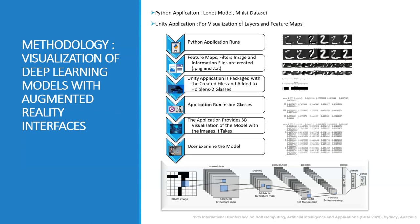In the study, a specific path was followed. In the Python application, the LeNet model was created. It was trained with the MNIST dataset and then tested with sample data. The filters used at this stage were saved as PNG files. In addition, the weight values of these filters were stored in TXT files. During the testing phase with sample data, the feature maps in the layers were also recorded. Each numerical value of the MNIST dataset was tested and the feature maps of all these values were recorded.